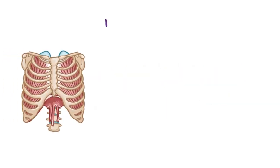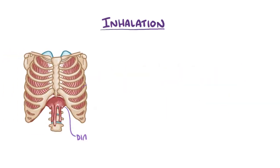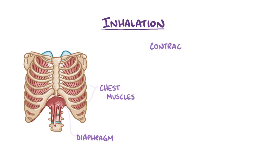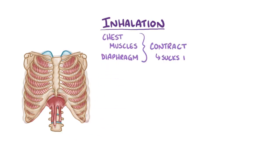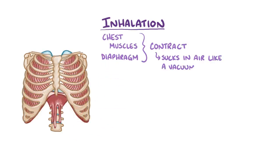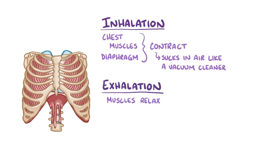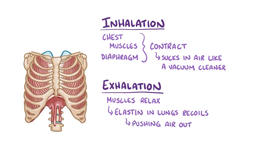Normally during an inhalation, the diaphragm and chest wall muscles contract to pull open the chest, and that sucks in air like a vacuum cleaner. Then during an exhalation, the muscles relax, allowing the elastin in the lungs to recoil, pulling the lungs back to their normal size and pushing that air out.